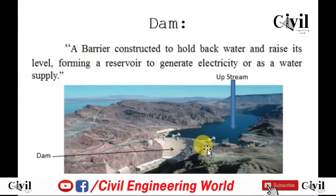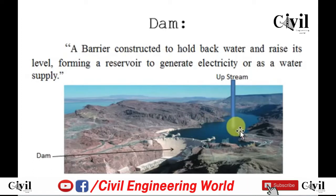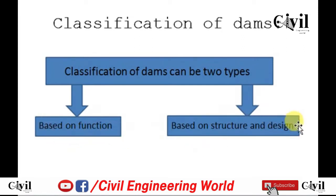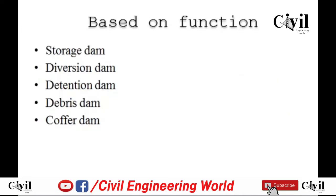Starting from the basic definition: a dam is a barrier which is constructed to hold back water and raise its level, basically forming a reservoir to generate electricity or as a water supply. There are two classifications of dams — based on function, and based on structure and design.